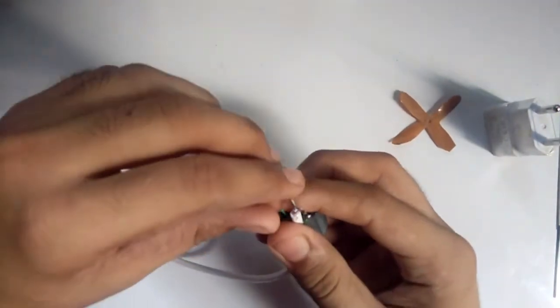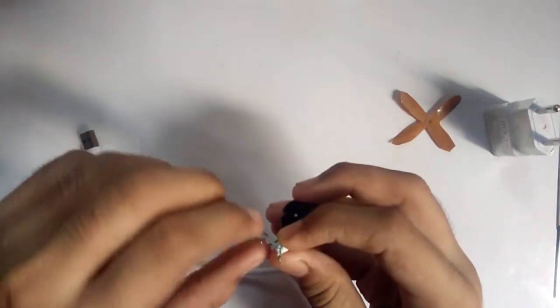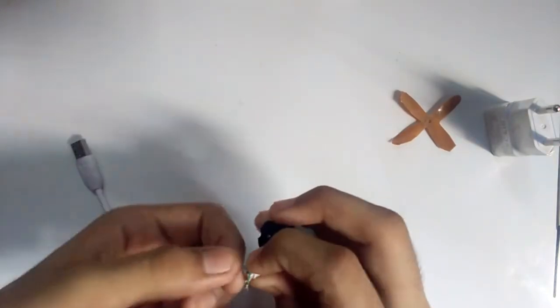Then connect the second wire on the side of motor.